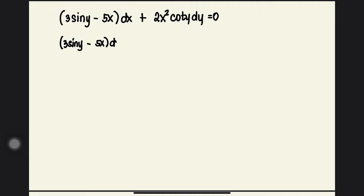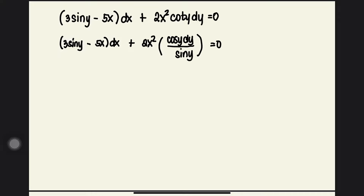So we rewrite the equation as: (3 sin y − 5x) dx + 2x² · (cos y dy / sin y) = 0. As we can see, if sine y is our new variable, its differential cosine y dy is also part of the integral.